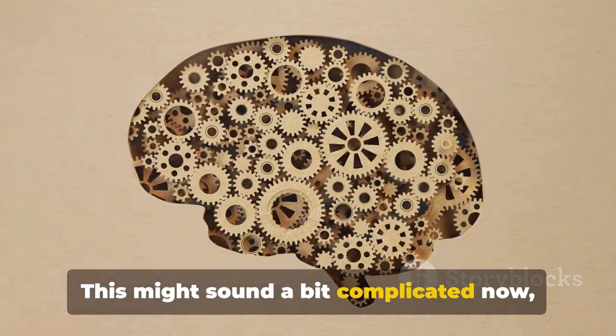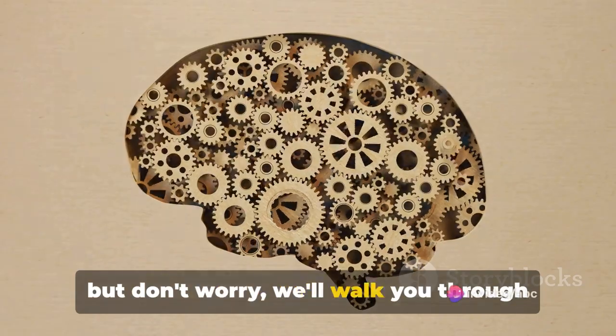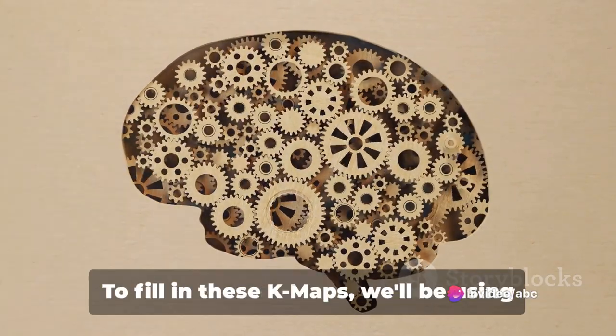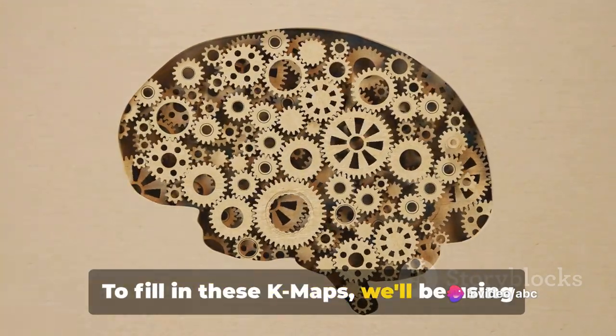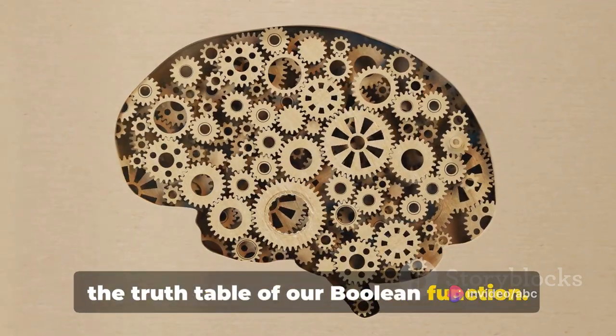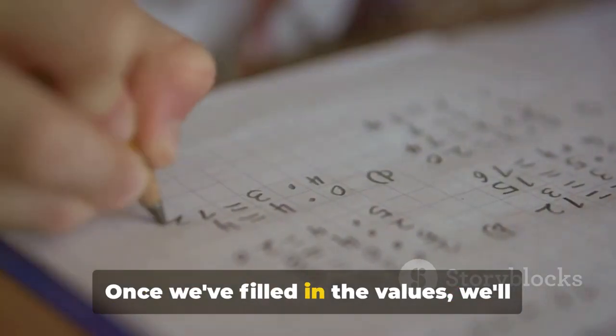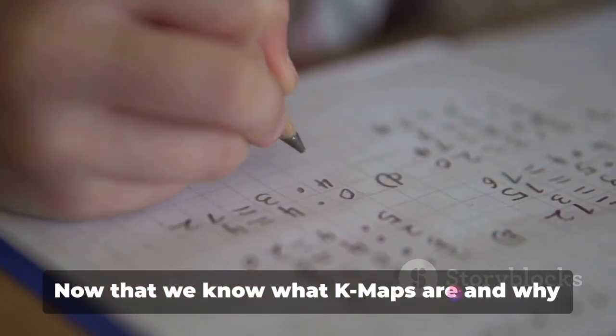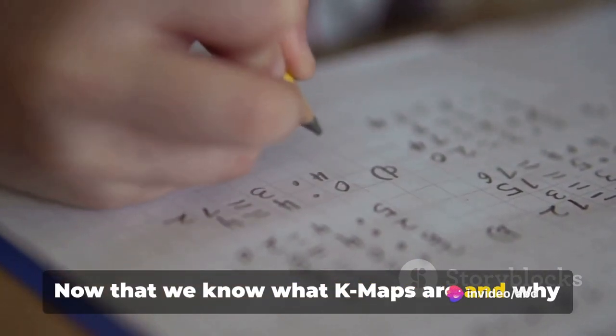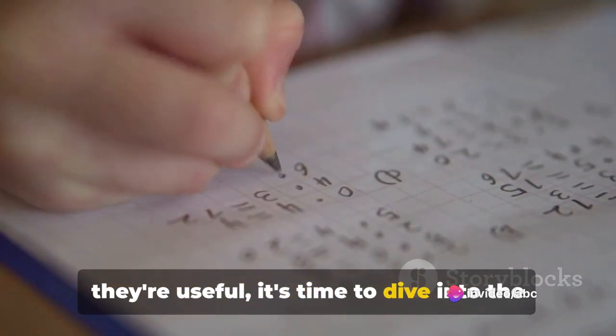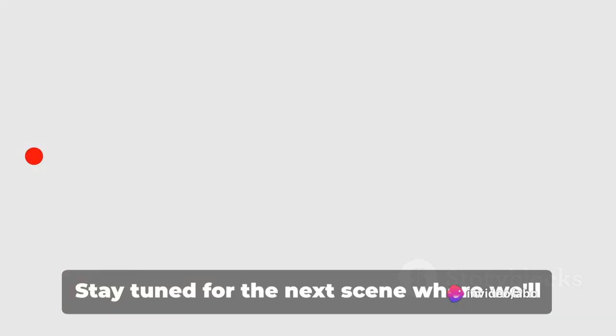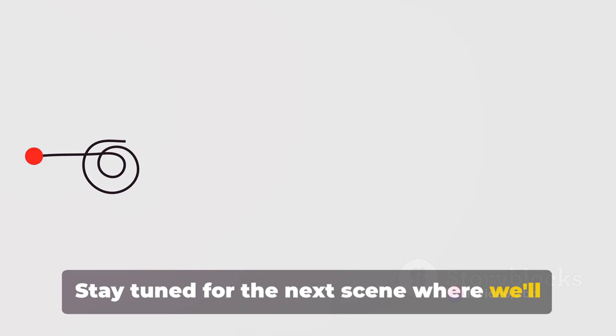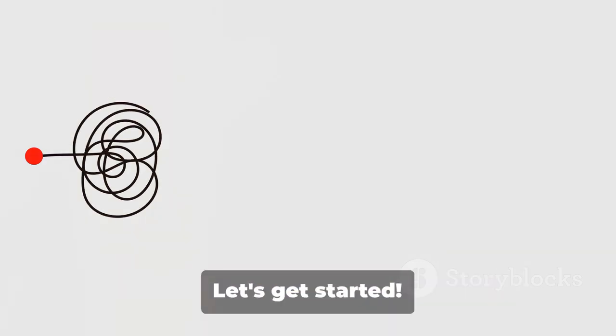This might sound a bit complicated now, but don't worry, we'll walk you through every step of the process. To fill in these K-Maps, we'll be using the truth table of our Boolean function. Once we've filled in the values, we'll use the K-Map to simplify the Boolean expressions of our functions. Now that we know what K-Maps are and why they're useful, it's time to dive into the process of creating them. Stay tuned for the next scene where we'll start with a 5-variable K-Map. Let's get started.